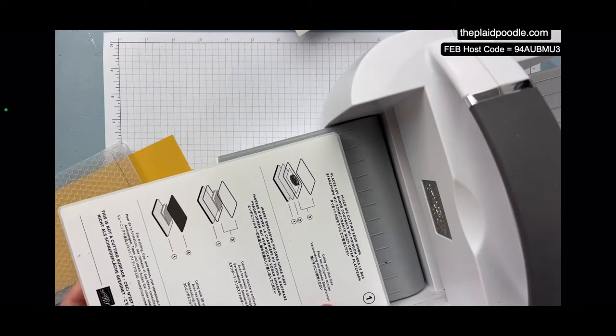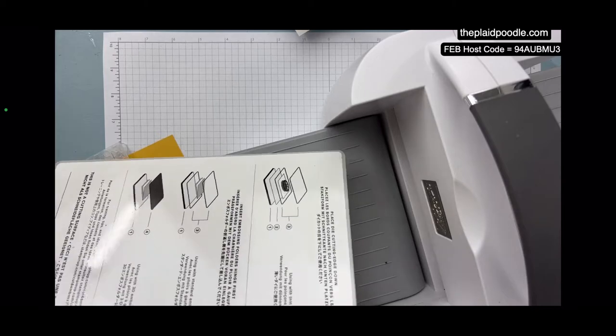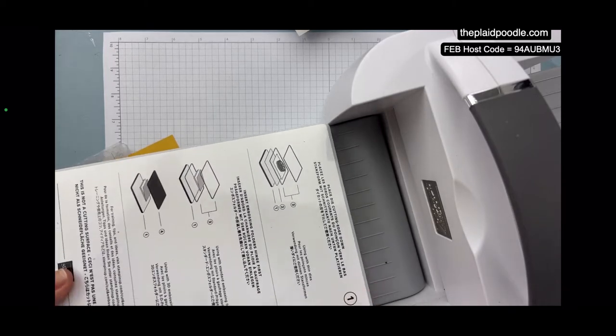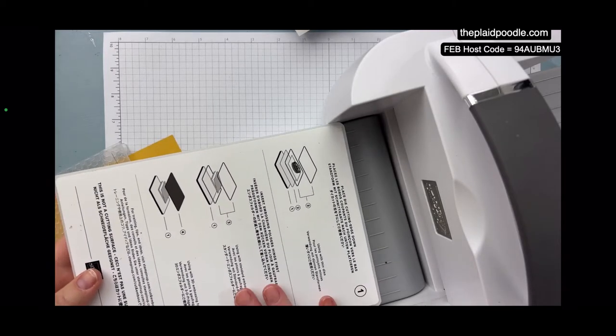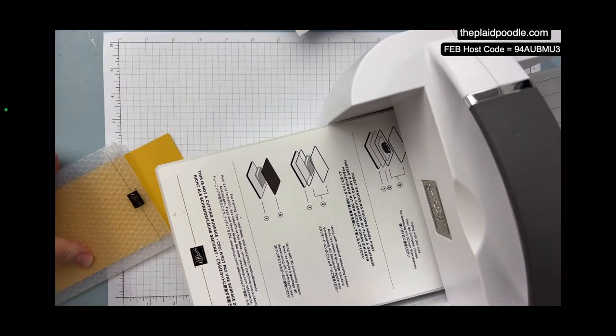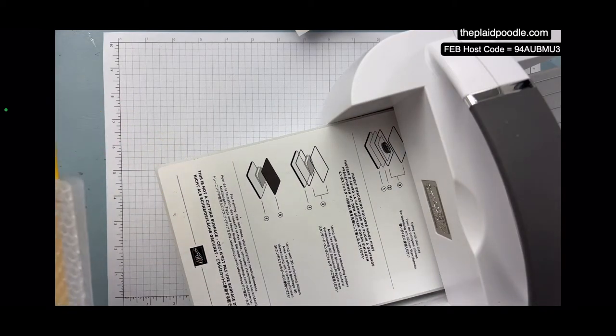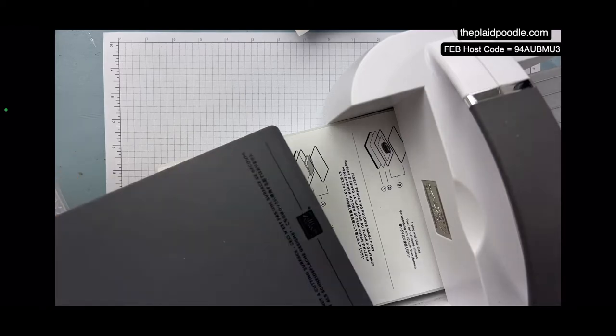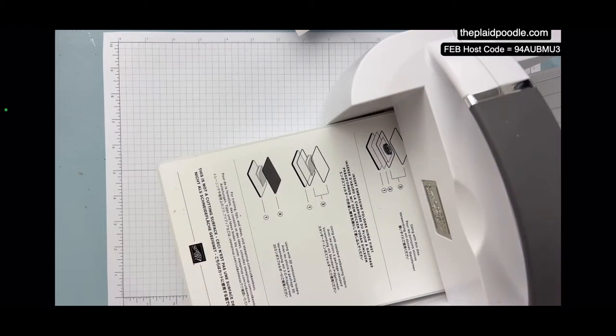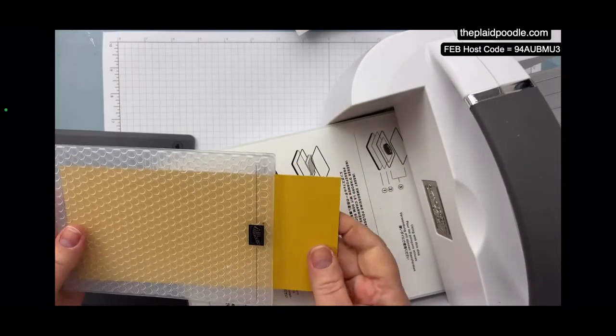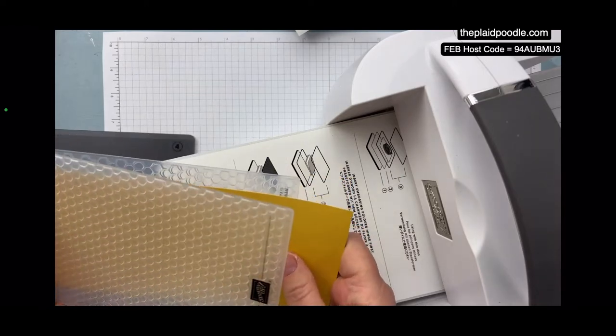Okay, this is a 3D embossing machine. So if you have one, you'll have to figure out your plates. The Stampin' Up Cut and Emboss machine uses a special plate—plate number 4 with plate number 1—to do the 3D embossing folders.